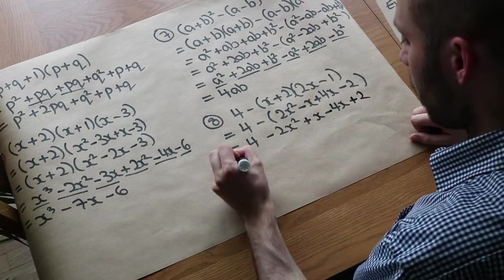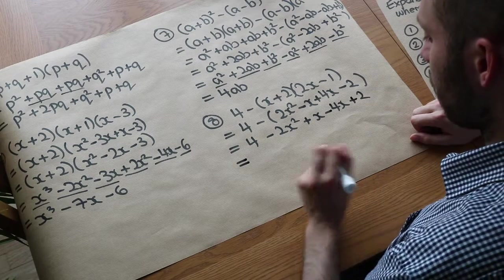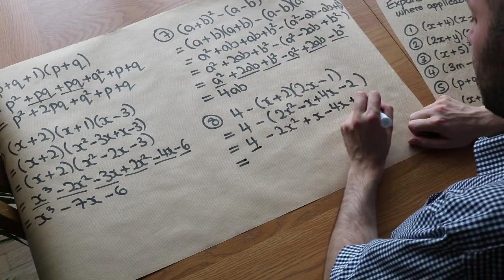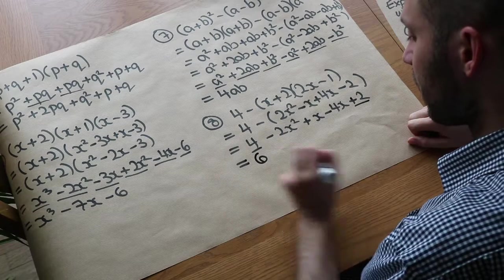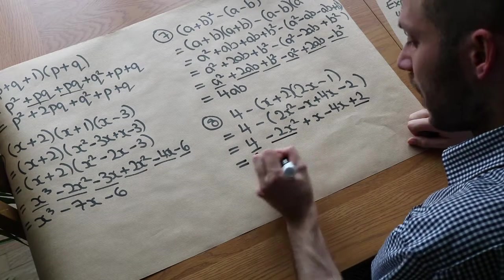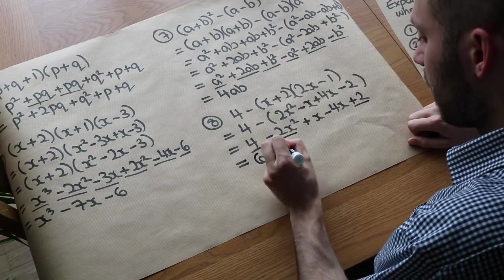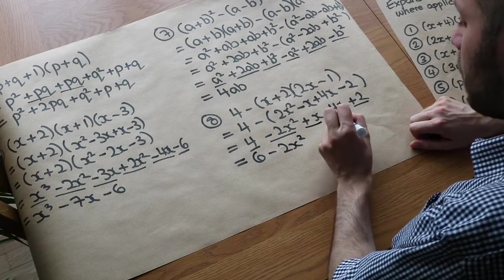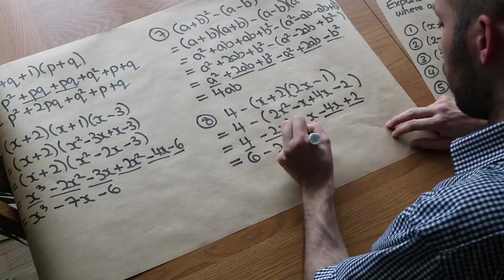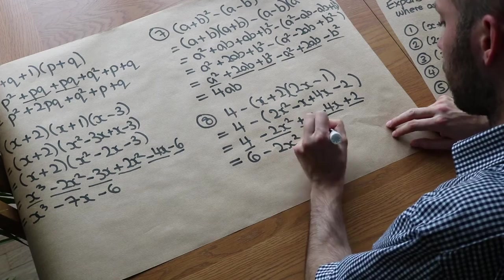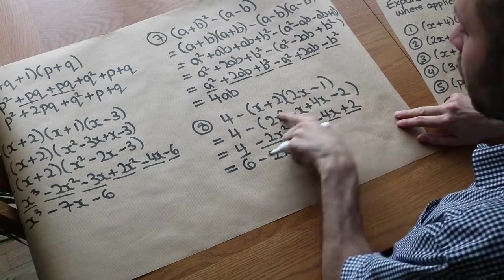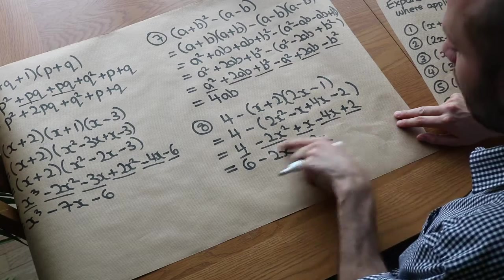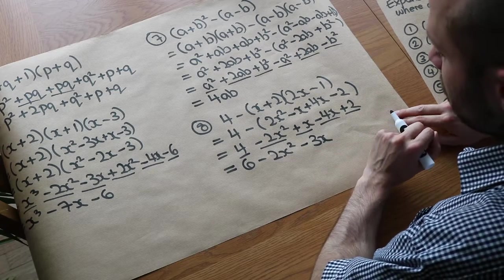Now we subtract each thing in the bracket. So we've got 4, minus 2x squared, minus minus x which is plus x, minus 4x, and minus minus 2 which is plus 2. Simplifying: 4 plus 2 is 6. No other x squared terms, so just minus 2x squared. And x minus 4x is minus 3x. The final answer is 6 minus 2x squared minus 3x.